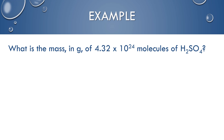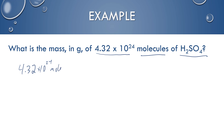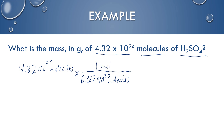Our last example: what is the mass in grams of 4.32 times 10 to the 24th molecules of H₂SO₄ — sulfuric acid? I start with 4.32 times 10 to the 24th molecules. To get from molecules to moles I use Avogadro's number: 6.022 times 10 to the 23rd molecules per mole. Remember, you can't go directly from molecules to grams — you must convert to moles first.